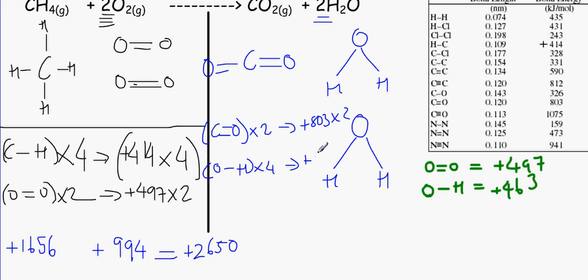O to H is plus 463. Times that by 4. And I'm going to write down the result here. OK, so I have multiplied 803 by 2 to make 1,606. Same thing with 463 times 4 to make 1,852.